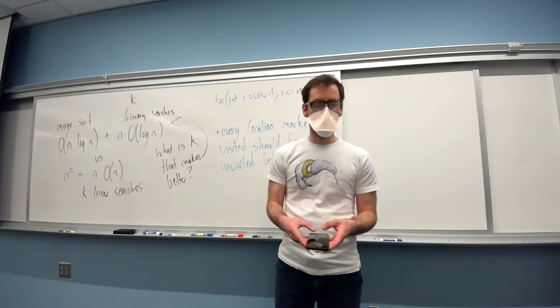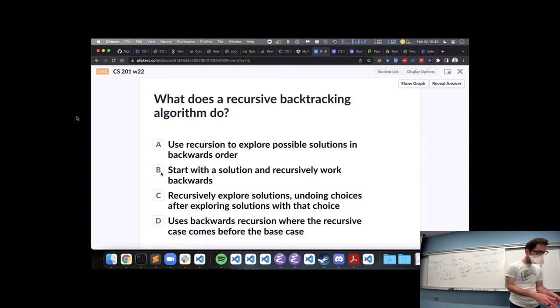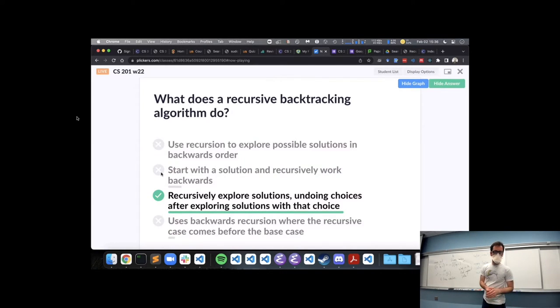All right. One more of these. Another definition one. What does a recursive backtracking algorithm do? I will agree with the majority here that our recursive backtracking is trying a choice, recursively exploring it, and undoing the choice afterwards. Does that make sense? Any questions on this?